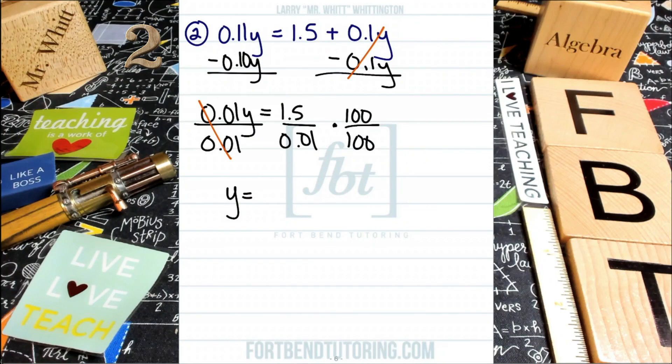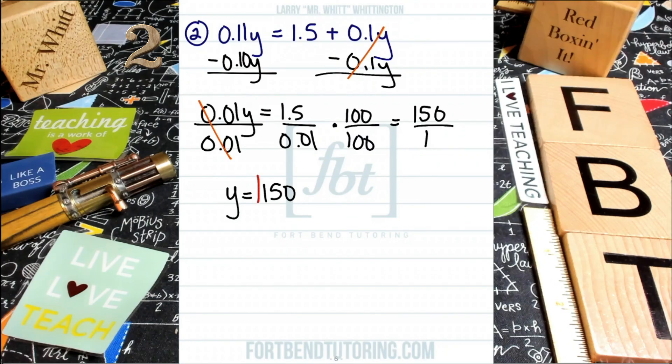So if I multiply both sides by a hundred, you're going to end up with, move the decimal over two places to the right, 150 divided by one. Well, that just equals to 150. Okay. So that's one way of attacking it. I kind of didn't like that last part either, but I'm going to red box it. Alright. And mind you, this is not the way I would solve it. I would probably solve with the second method.